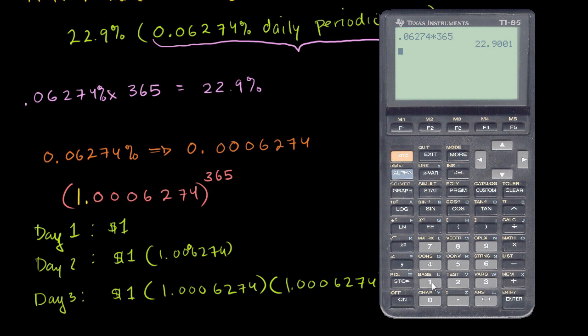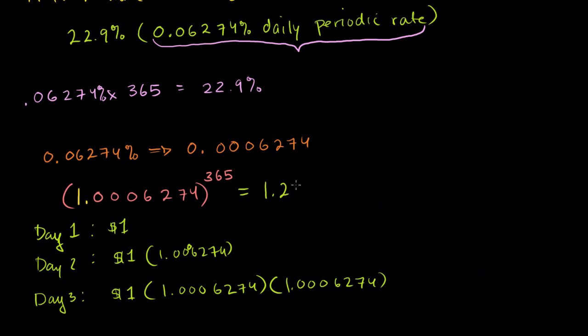Let's calculate it. If I take 1.0006274 and raise it to the 365th power, I get 1.257. So compounding 0.06% for 365 days means I'd owe 1.257 times my original principal.